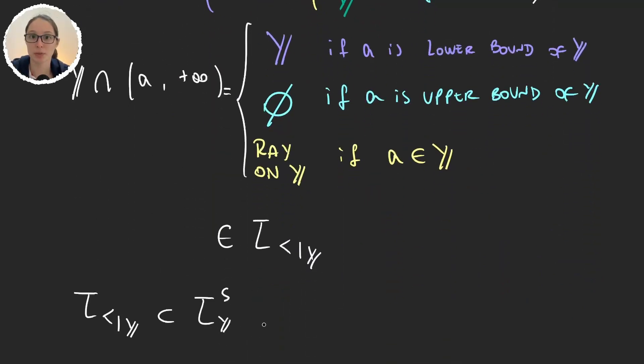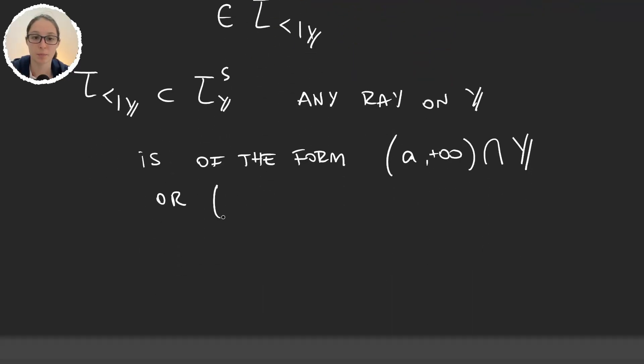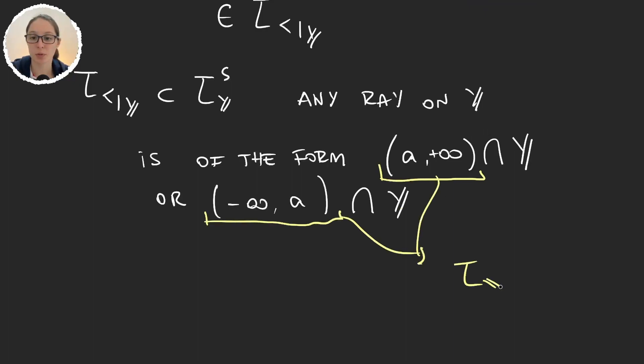Because, obviously, any ray in Y has to be of the form (A, infinity) intersection Y, or (-infinity, A) intersection Y. And given that this ray or this other, these are two elements in the X topology given by the order in X, then we were able to write some ray in Y as an intersection of an open set in X intersection Y.